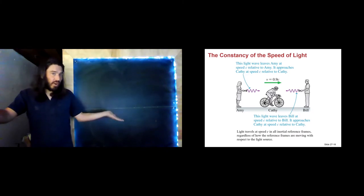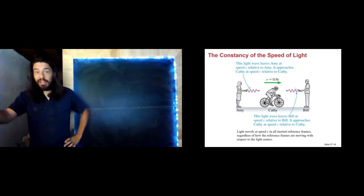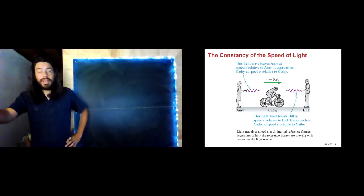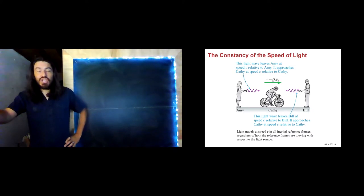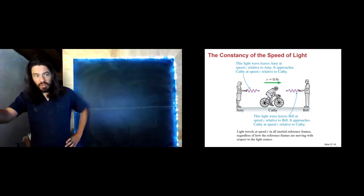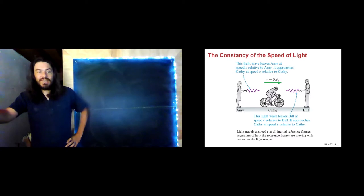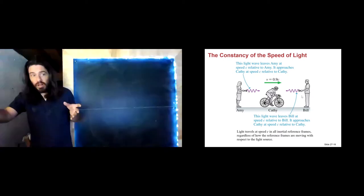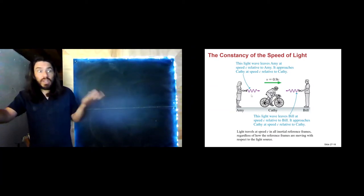According to the math we've done so far, if Einstein was not right, she should measure 1.9C for the light beam traveling towards her, and 0.1C for the light beam moving away. We know for sure that the light leaves Amy and Bill at the speed of light. So if Einstein was wrong, we should get 1.9C and 0.1C. We don't.